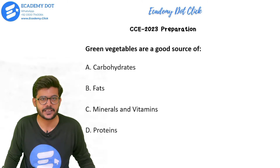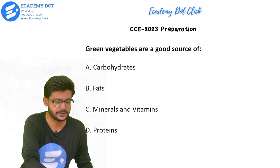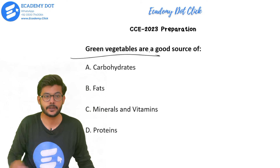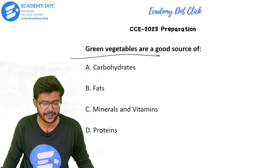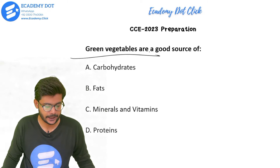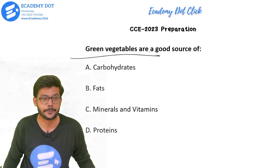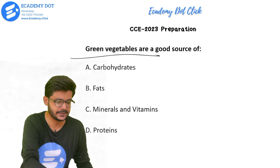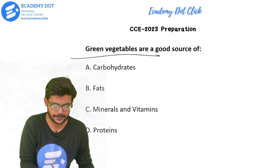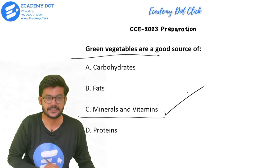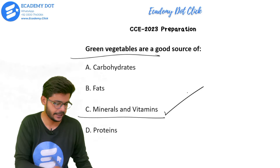Next question: green vegetables are a good source of what? Options are carbohydrates, fats, minerals and vitamins, or protein. The right answer is option C, that is minerals and vitamins.